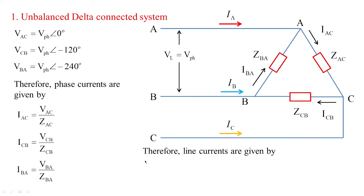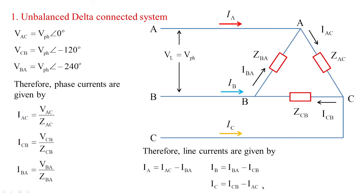What about the line currents? By applying KCL at loads A, B, and C respectively, we get the line currents as: IA equals IAC minus IBA, IB equals IBA minus ICB, and IC equals ICB minus IAC. So this is the method for the delta network.